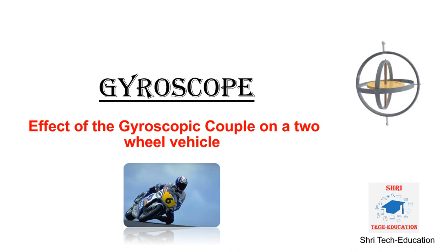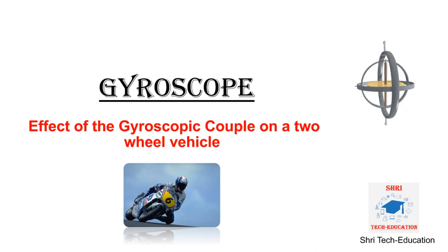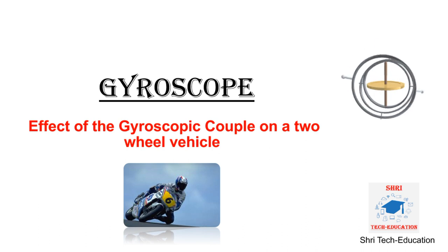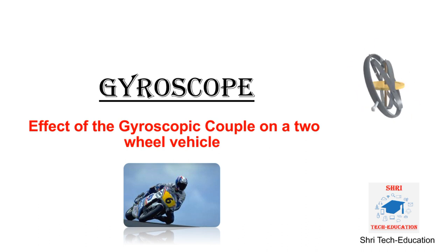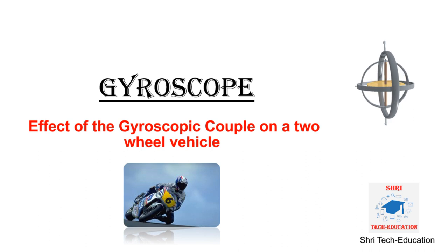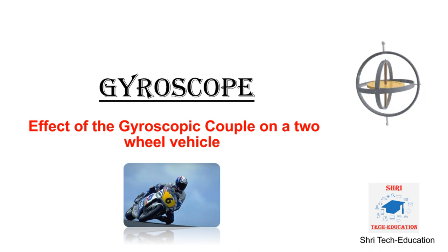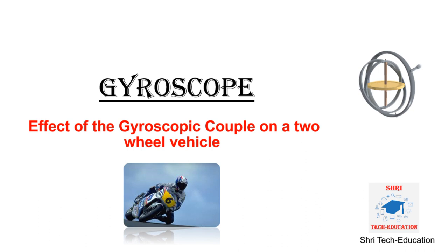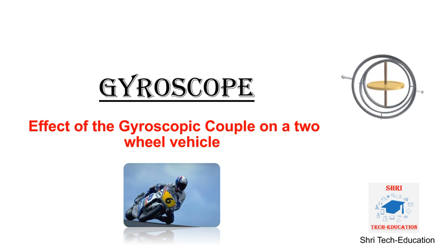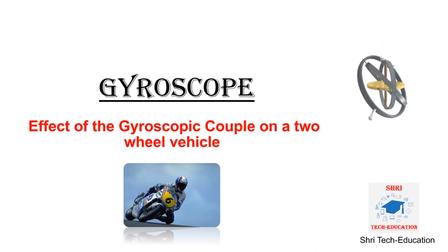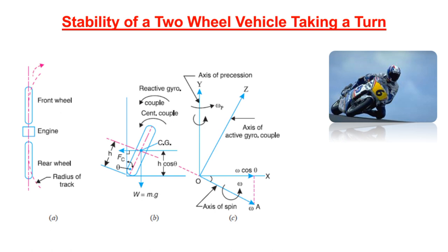Similarly for the engine: when moving in a straight path, the engine parts rotate about their own axis with no axis of precession and therefore no gyroscopic couple. But when the vehicle takes a turn, a gyroscopic couple acts on the engine as well. We will study these effects through the stability of a two-wheeled vehicle taking a turn.